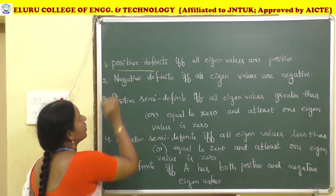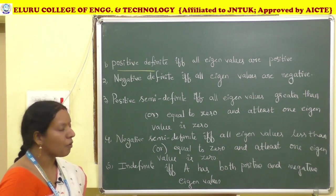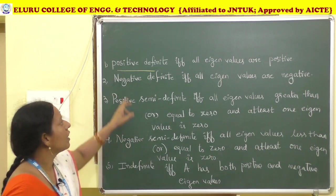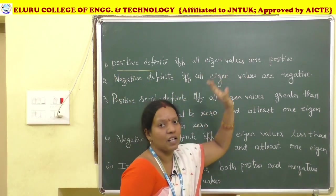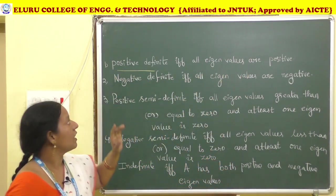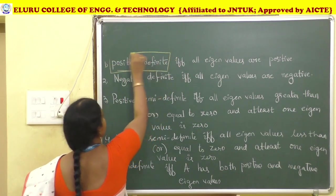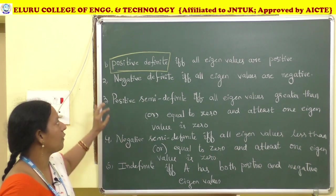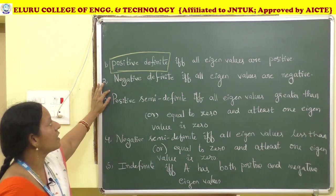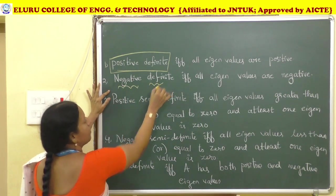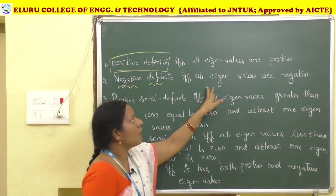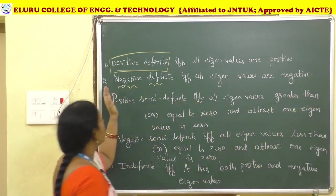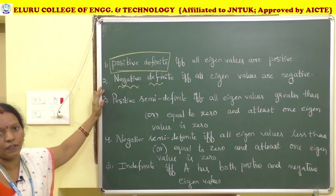Positive Definite: if all eigenvalues are positive after finding them from the characteristic equation, then the given quadratic form is positive definite. Negative Definite: if all eigenvalues are negative, the given quadratic form is negative definite.